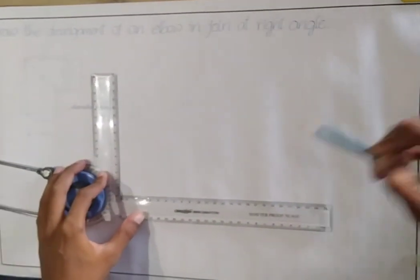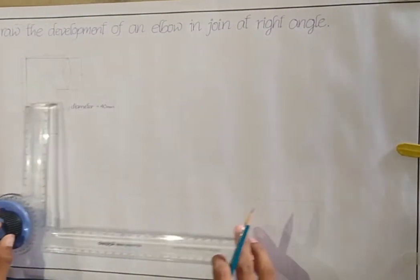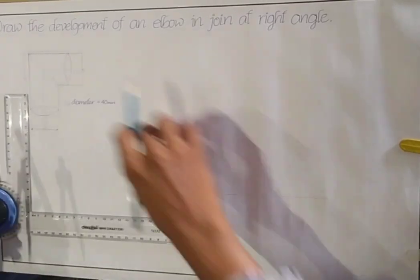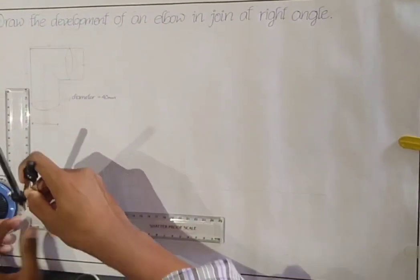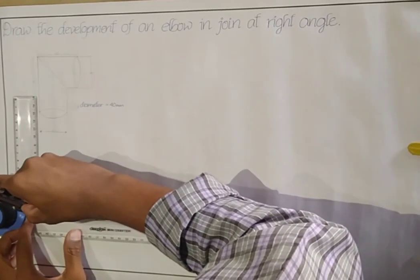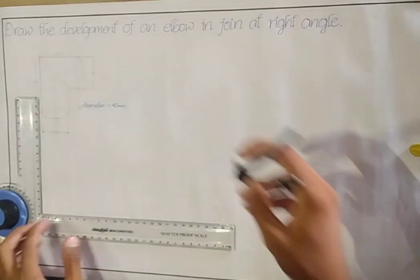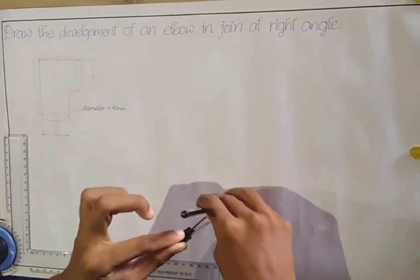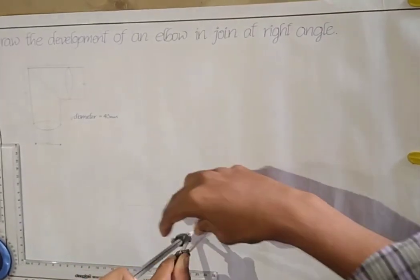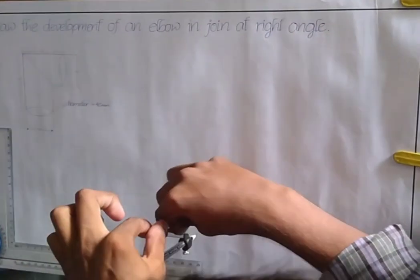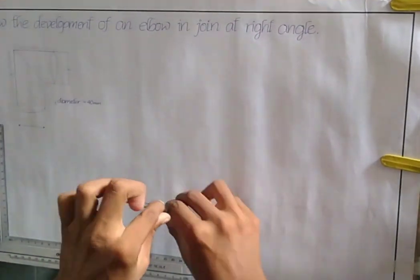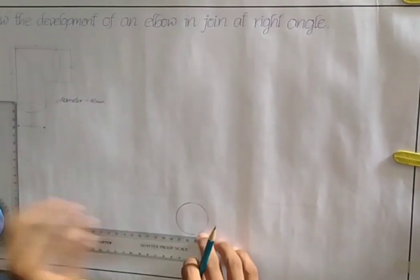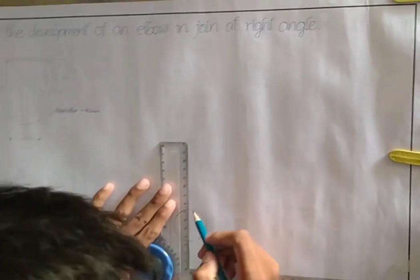I am drawing the surface development of an elbow by using the top view and front view of a given figure. First, to draw the top view, the diameter is 40mm, so take the radius of 20mm and draw the circle to get the top view. After drawing the circle, make it four parts.